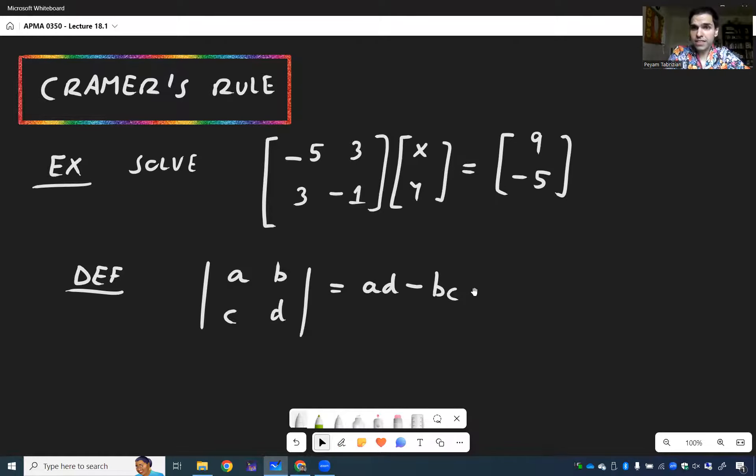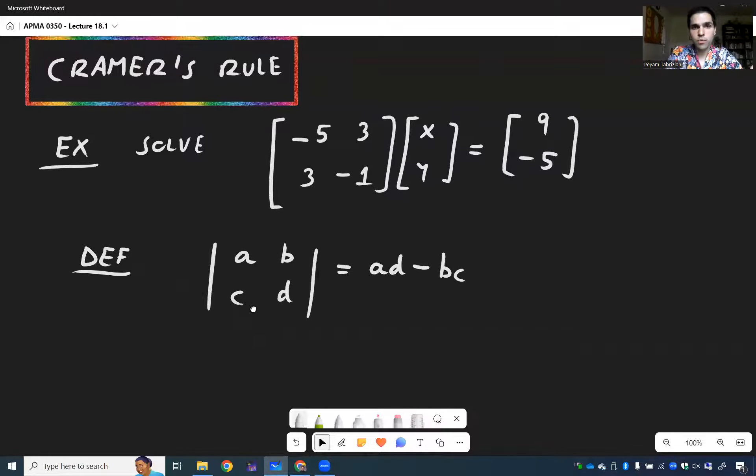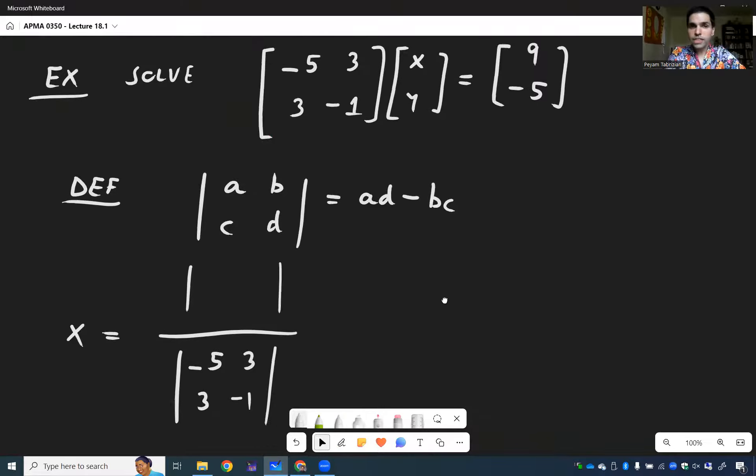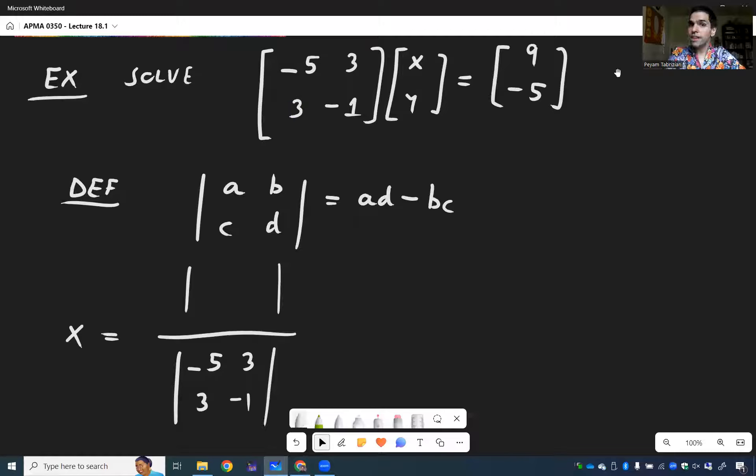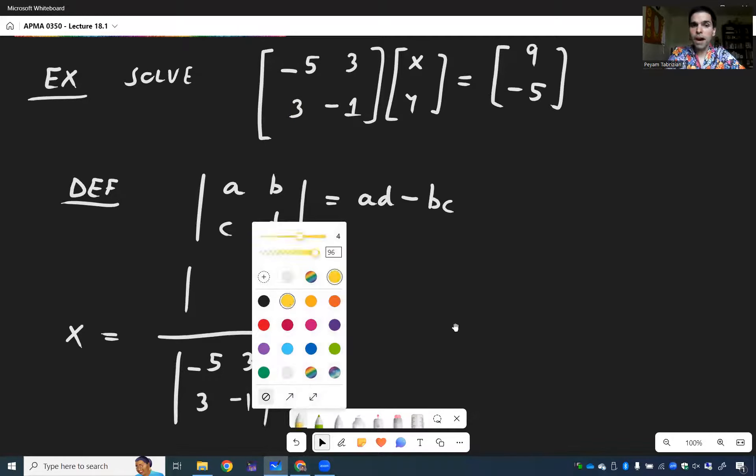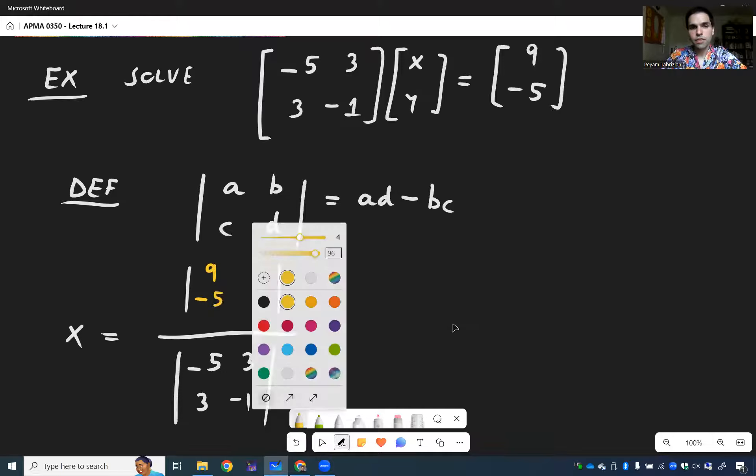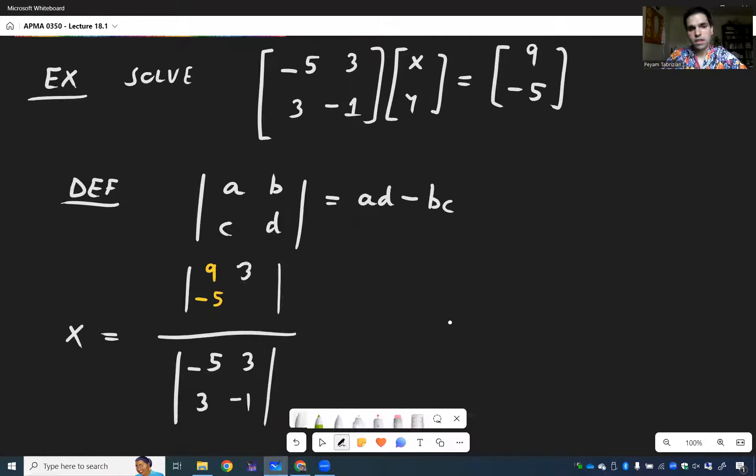And what Cramer's rule is, it gives you your solutions x and y directly in terms of determinants. So what you do for x, you divide by the determinant of your original matrix. So -5, 3, 3, -1. And for the numerator, you take the same matrix, but replace the first column by the right-hand side. So instead of putting -5, 3, you put 9, -5. And the rest is the same. 3, -1.